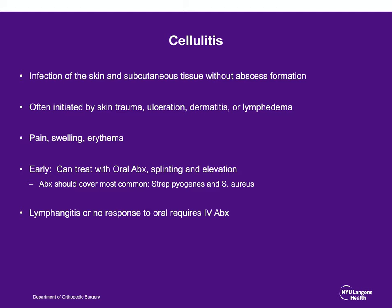Cellulitis is an infection of the skin and subcutaneous tissue, and there is no abscess or fluid collection. If it is caught early, it can be treated with oral antibiotics, splinting — which is a mainstay of all infections to allow the soft tissues to rest — and elevation. If a patient presents with a prior oral antibiotic trial without improvement, or they present with lymphangitis, which is erythematous streaking, this often requires IV antibiotics.